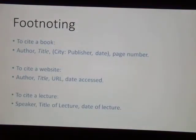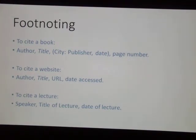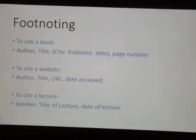If you're citing a book, which is definitely preferred, you would want the author of that book, comma, the title — and remember book titles are always italicized — comma, then in parentheses the city, colon, the publisher, comma, and the date, comma, and then at the end the page number that the information was taken from.